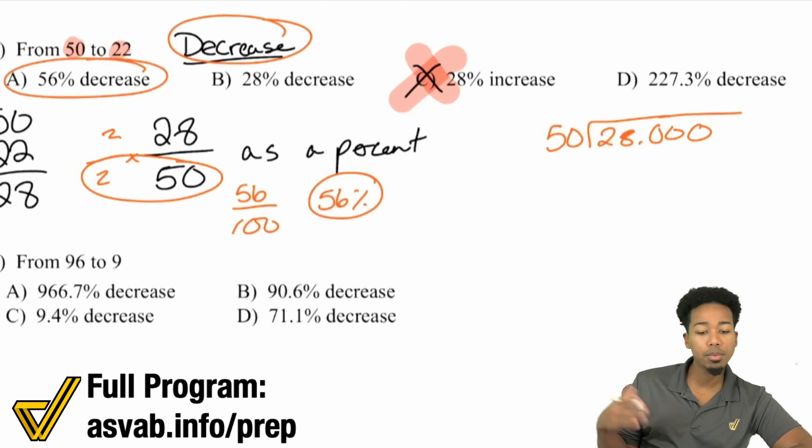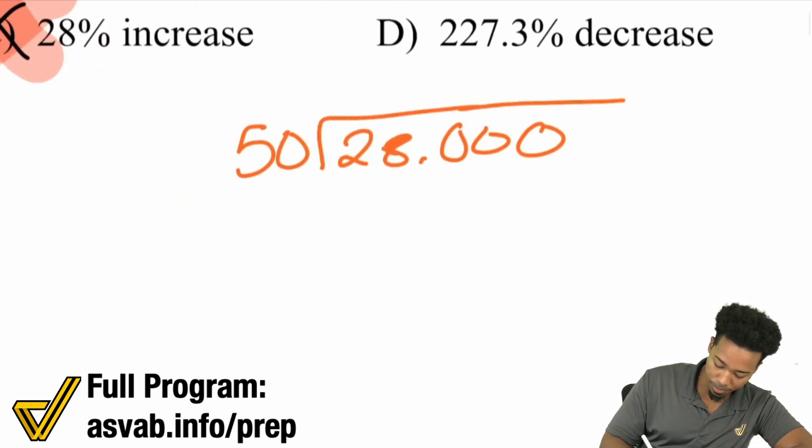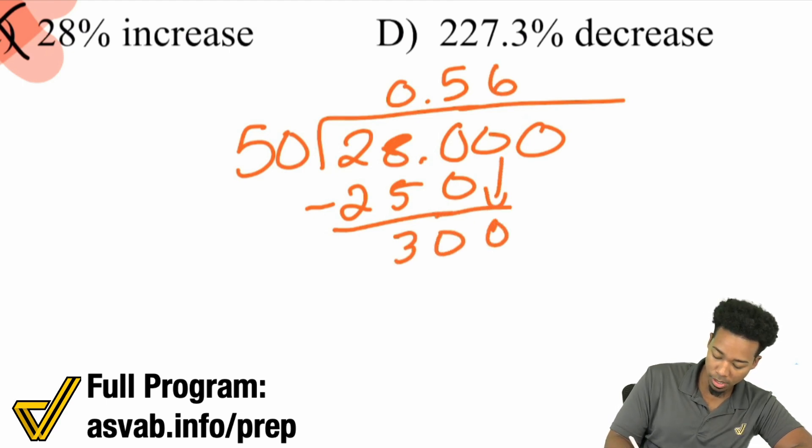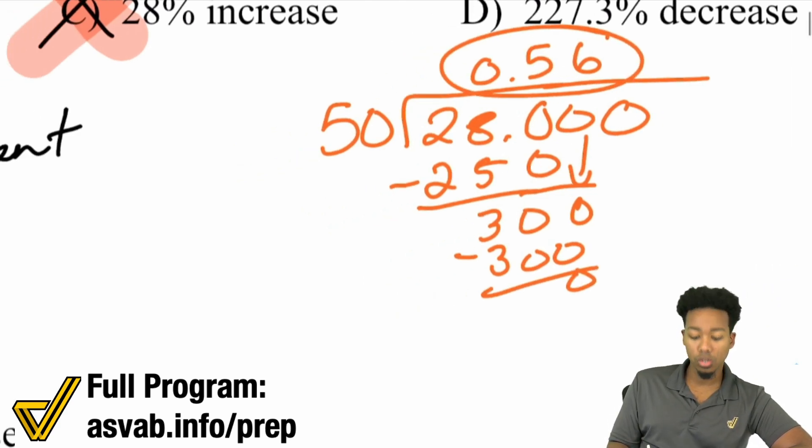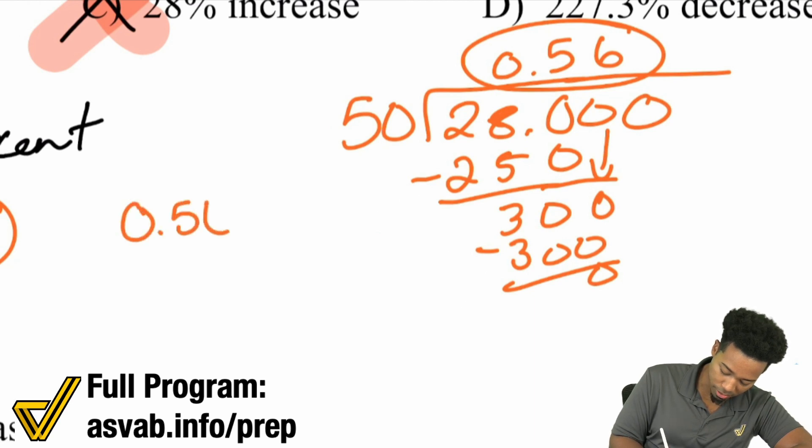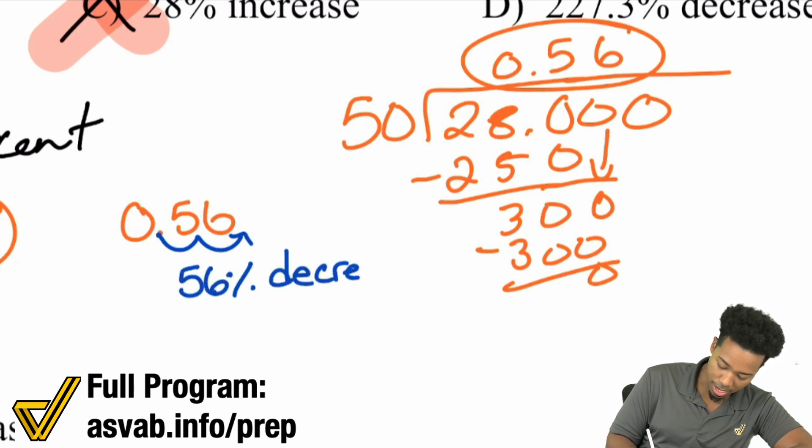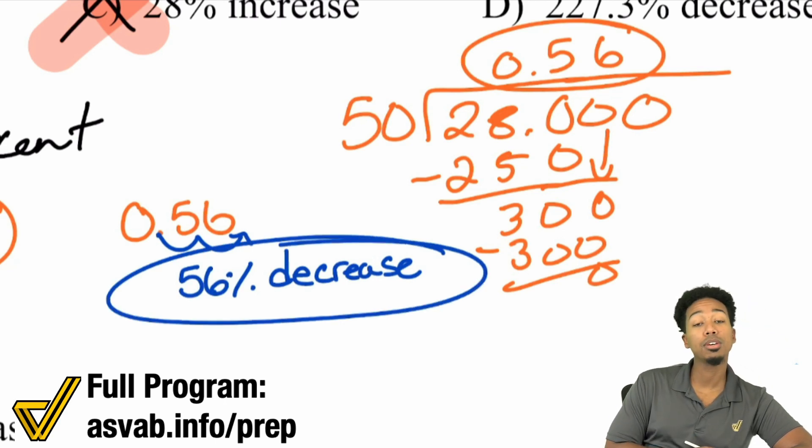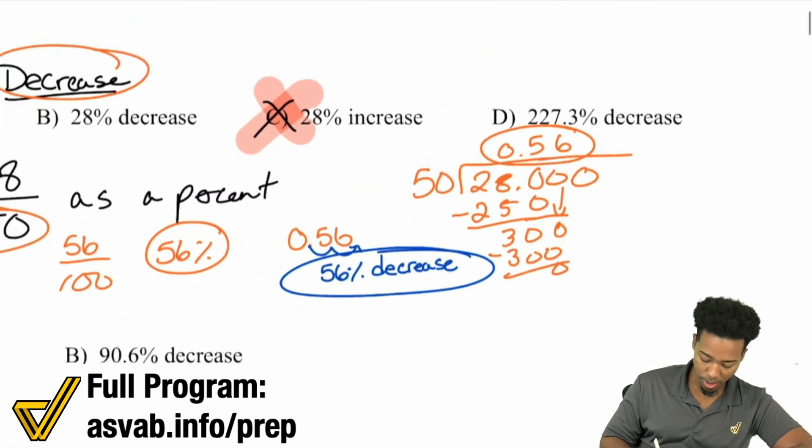A 56% decrease, and A is the answer. But let me show you straight up: 50 doesn't go into 28, that's zero. 50 into 280 is 5, minus 250, you got 30 left. 50 into 300 is 6, minus 300 is zero. 0.56. Turn that into a percent by moving it over two times and you have 56%. It was a decrease like we said, so 56% decrease.